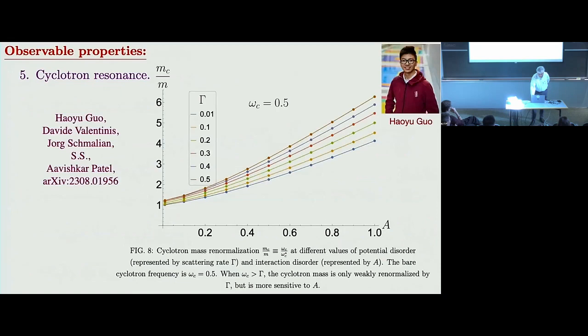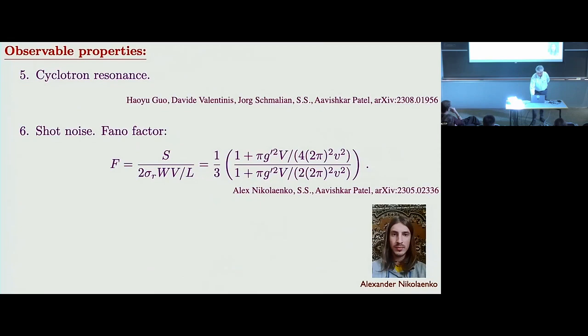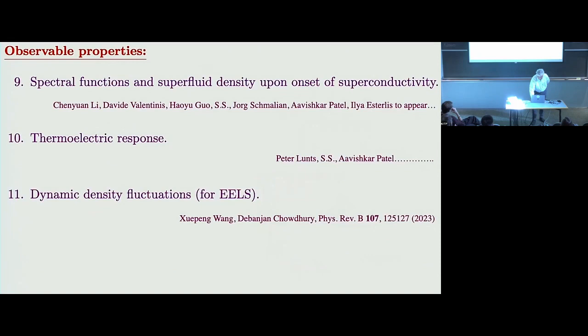Continuing — we are now looking at many other properties. The cyclotron resonance in the G-prime model has some dependence on the strength of interaction. There's shot noise — you get a suppression of the Fano factor from one-sixth to one-third, and Doug may say something about his experiments on shot noise later. We are working with Yörk Schmalian's group and Davide Valentinis on magneto-transport and Hall effect — we're optimistic that's going to work. We're also looking at non-linear optics, onset of superconductivity, thermoelectric response, and density fluctuations.